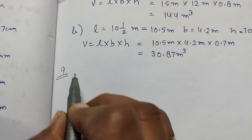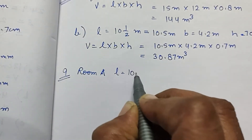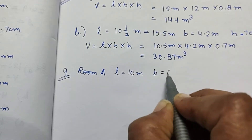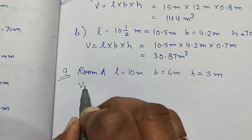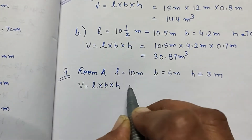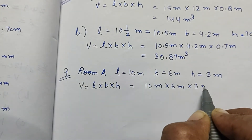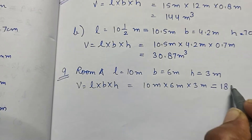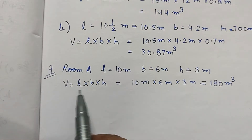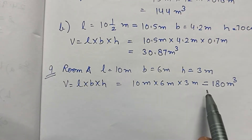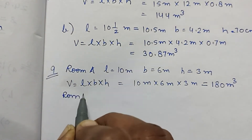Room A: length is 10 meters, breadth is 6 meters, and height is 3 meters. So volume is L into B into H, which equals 10 meter into 6 meter into 3 meter, which equals 180 meter cube. Simple — we apply the volume formula and put in the values of length, width, and height, then multiply to get the answer.